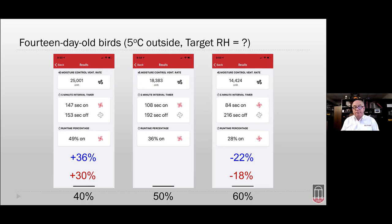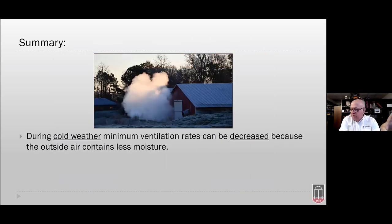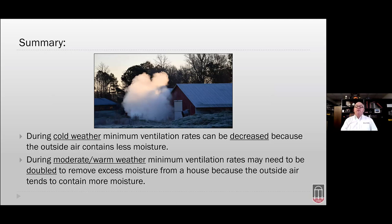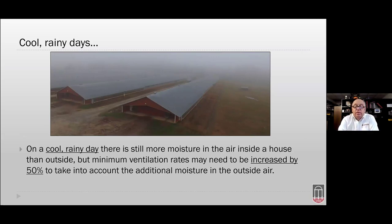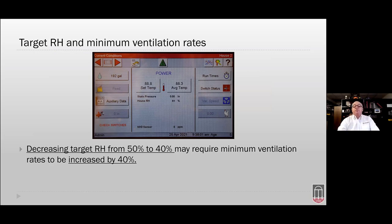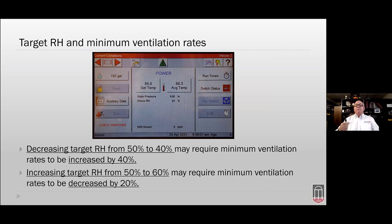In summary: during cold weather, minimum ventilation rates can be decreased because outside air contains less moisture. During moderate to warm weather, minimum ventilation rates need to be doubled to remove excess moisture. On cool rainy days, rates may need to increase 50-100% to account for additional moisture in outside air. Decreasing the target humidity from 50% to 40% may require a 40% increase in ventilation rate. Increasing the target from 50% to 60% may allow a 20% decrease in ventilation rate.